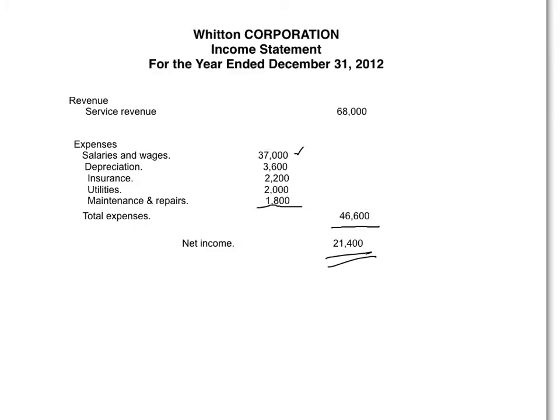There's your income statement — revenue and expenses. Expenses can be listed in any order; I listed them from high to low here. When adding, I move to an inside column. You see there are two columns — I move to the inside, total it, and bring it to the outside. On the outside I only have two items: revenue and expenses. The bottom line is net income of $21,400.